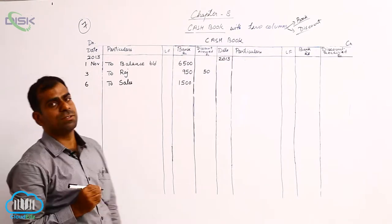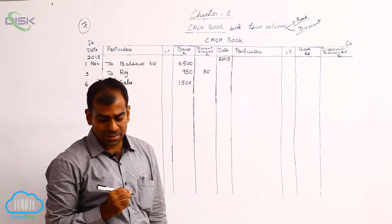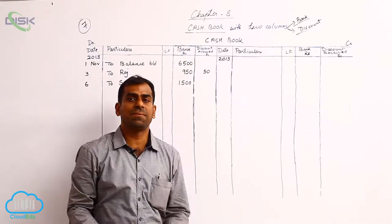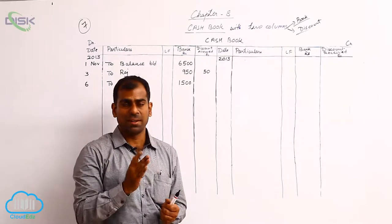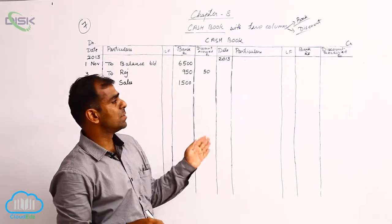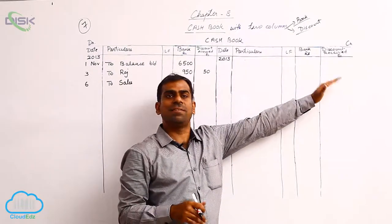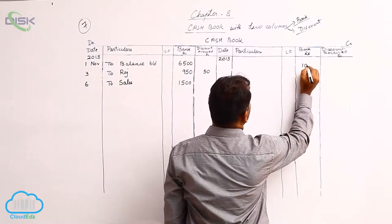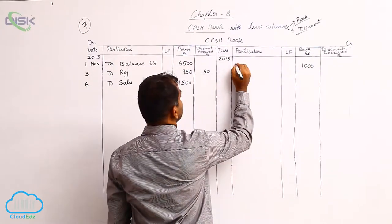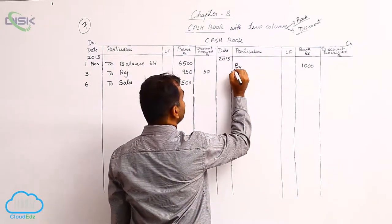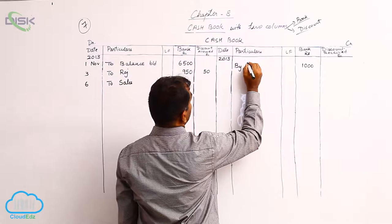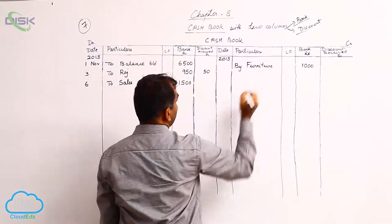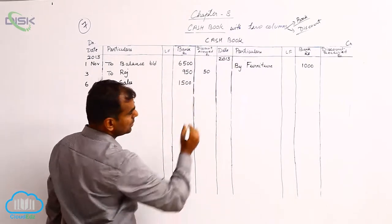The next transaction is on the 8th — furniture purchased and paid by check. Purchase of furniture is purchase of an asset, so money goes out. We record it on the credit side: 1000 rupees in the bank column, reason being furniture. The date is the 8th.